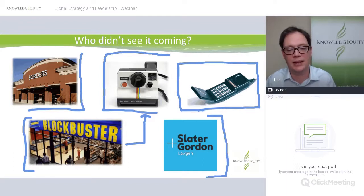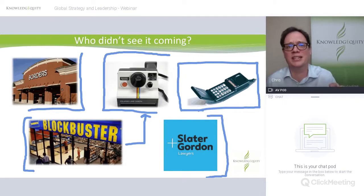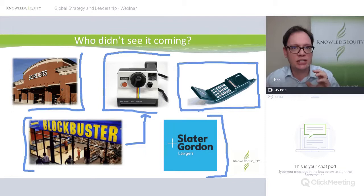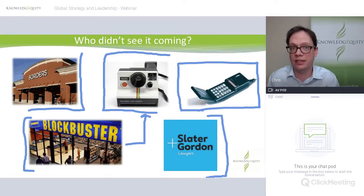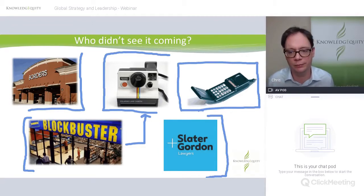Slater and Gordon — originally an Australian company of lawyers. They decided to list on the stock exchange and enter the UK market, known for taking on claims around workers' compensation and accident claims. But as they were entering the UK market, the UK government was going through fundamental changes in both policy and legislation. These changes were going to dramatically affect the business model of the company they wanted to acquire. They still went ahead with the acquisition. The changes came in, and their revenue slumped, their share price tumbled, and they basically nearly went bankrupt — in really just a couple of years.